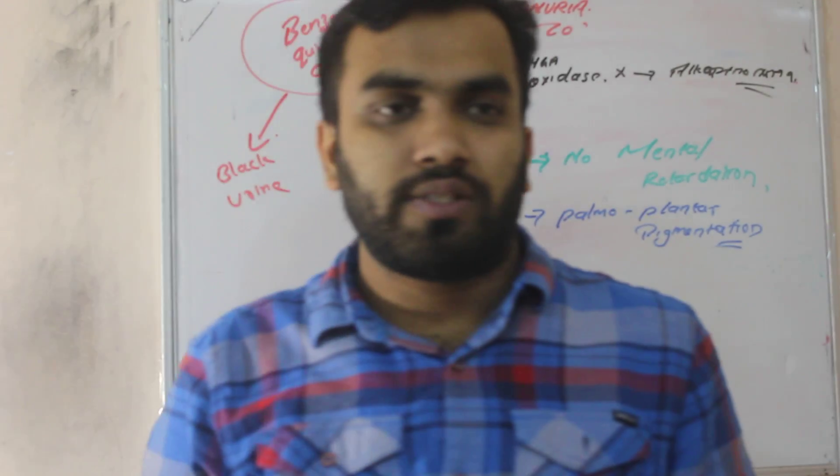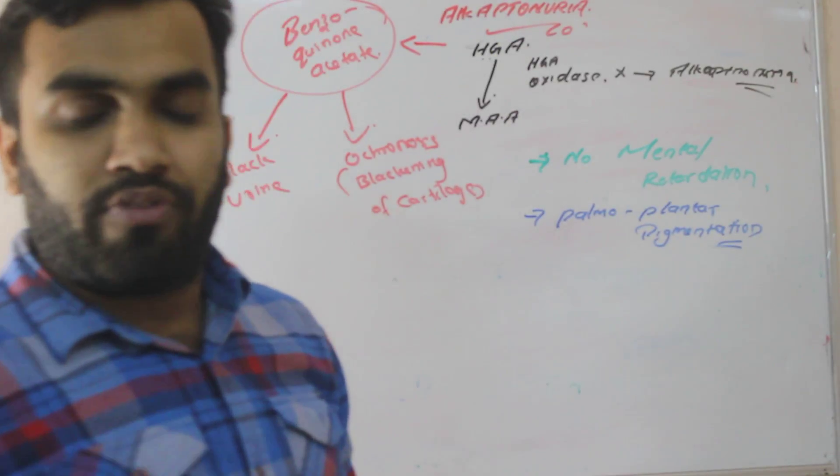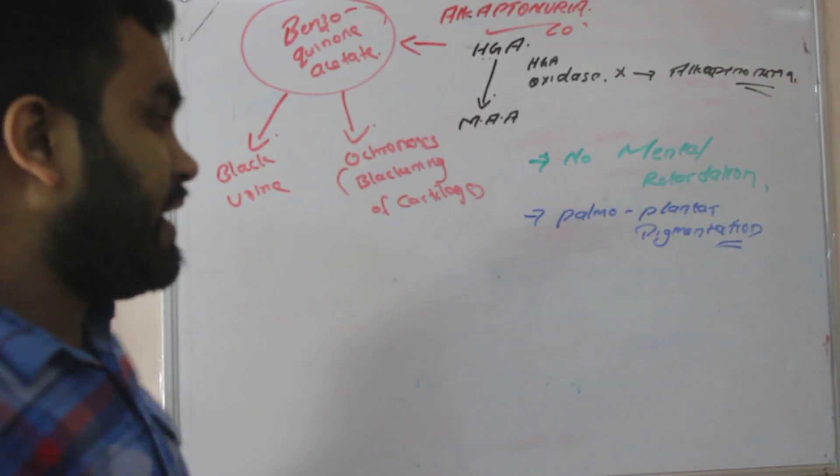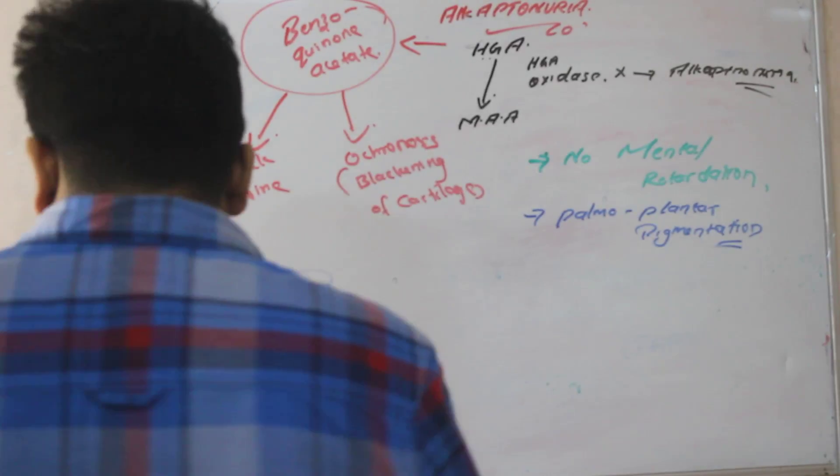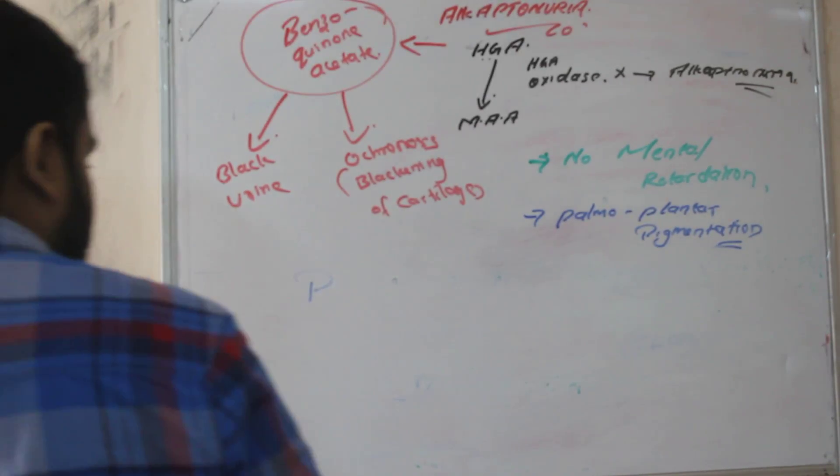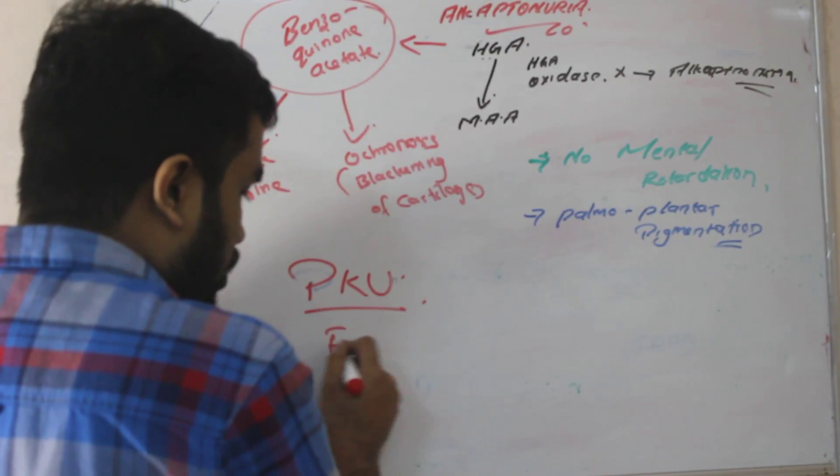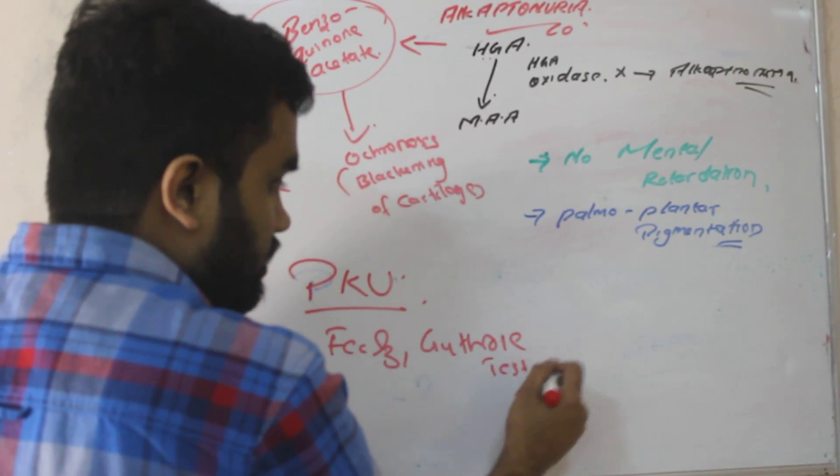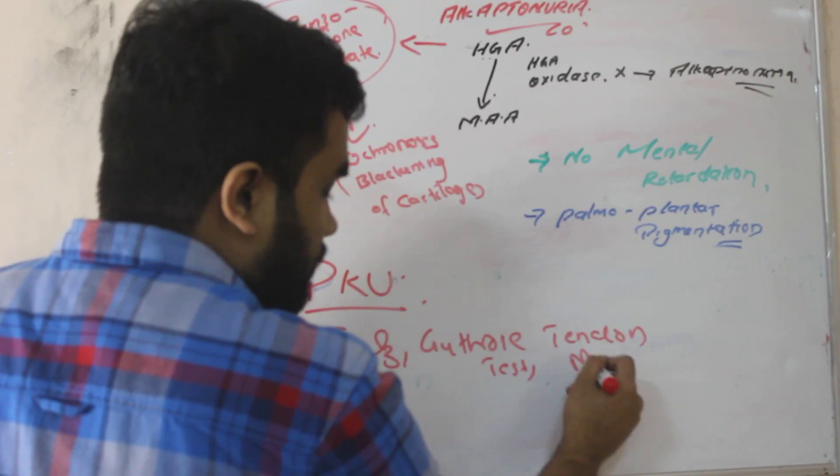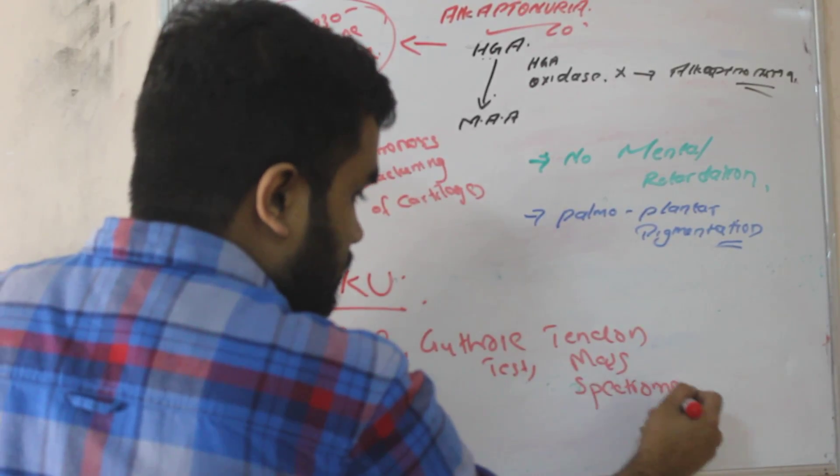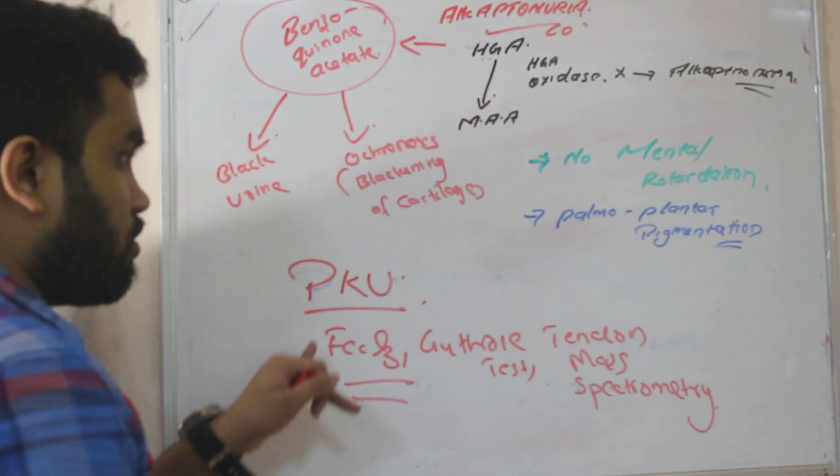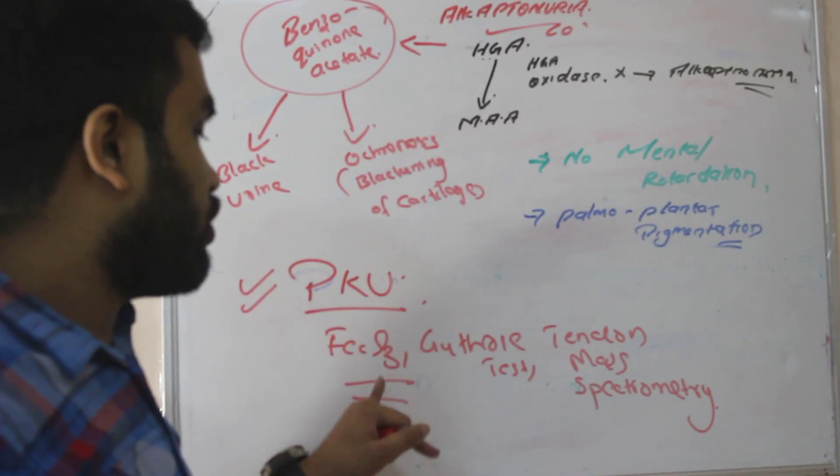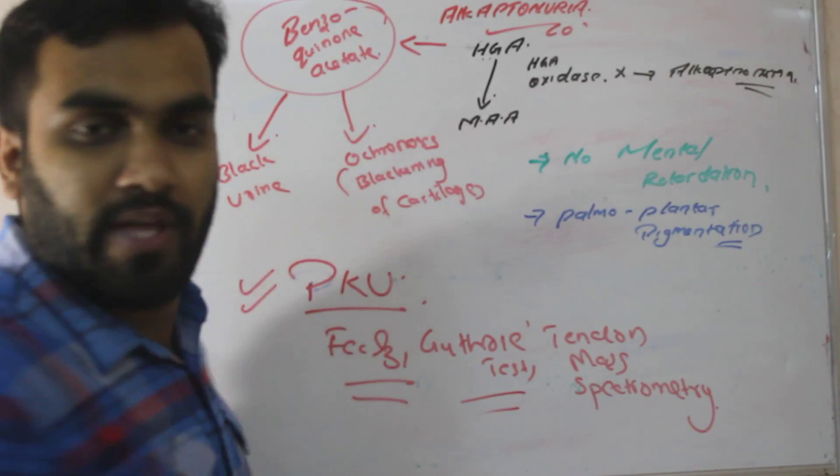So these are about alkaptonuria and phenylalanine metabolism. Phenylalanine, we have studied everything. PKU, in phenylketonuria we can do ferric chloride test, Guthrie test, tandem mass spectrometry. And this test is also done in alkaptonuria also. To know more about this, I have specifically done my video for phenylketonuria. You can watch, I am explaining all this test there. So thank you, thank you for watching.